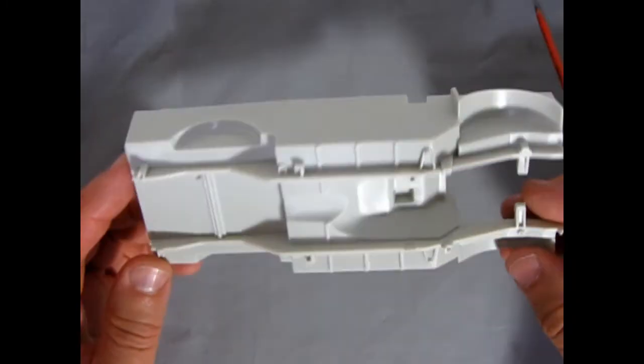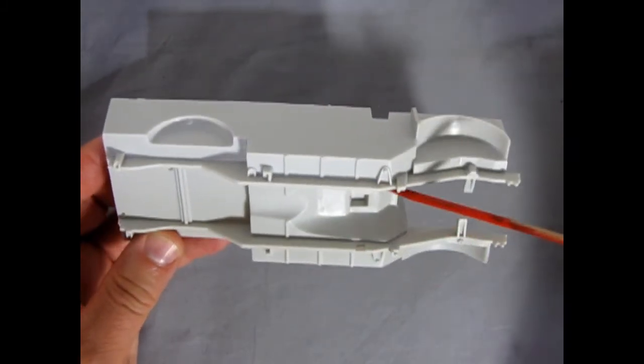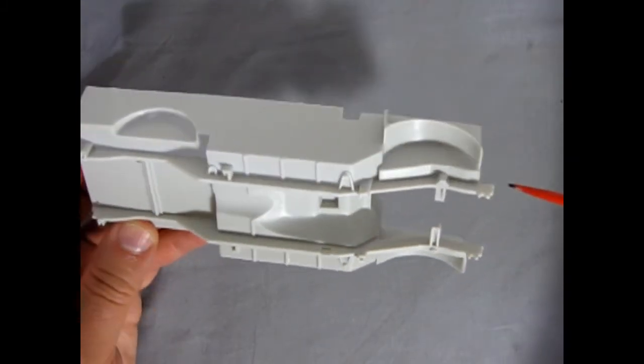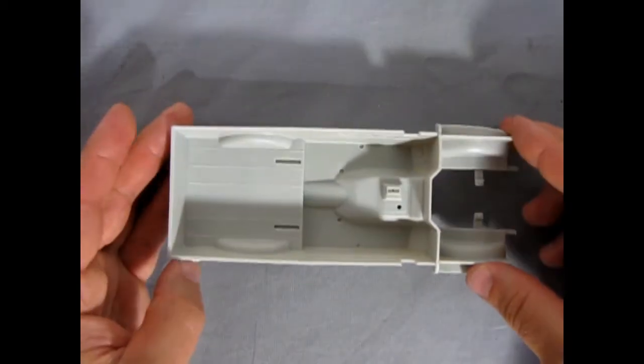Turning it over you can see the nice frame rails underneath as well as the ribbed floor. Lots of room here for that big engine to sit in and again very nicely detailed and very crisp looking.